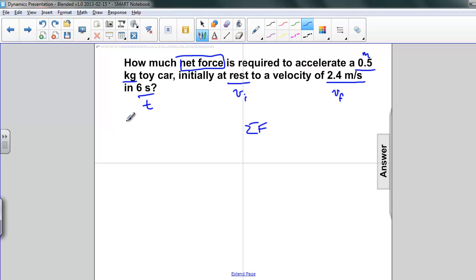So what to do? Well, first let's lay out what we do know. We know the mass, 0.5 kilograms. We know the initial velocity, it's 0, and we know the final velocity, it's 2.4 meters per second. And we know the amount of time that it takes the car to accelerate to that final velocity, 6 seconds. And what we're asked to find here is the net force. But the net force is equal to mass times acceleration, and here we seem to have a dilemma. We're not being told directly what the acceleration is.